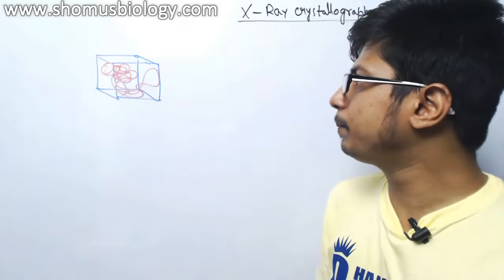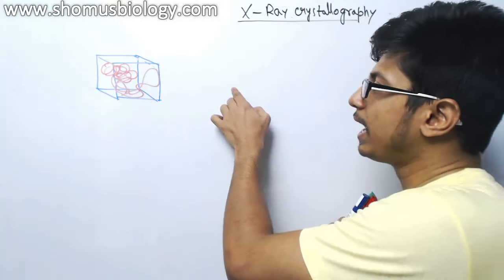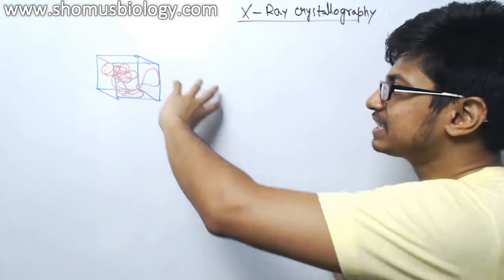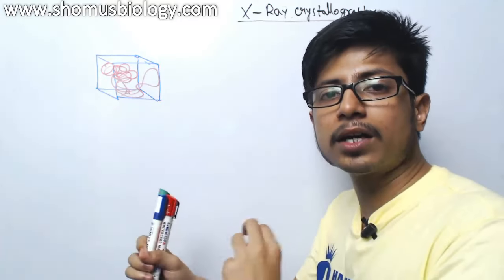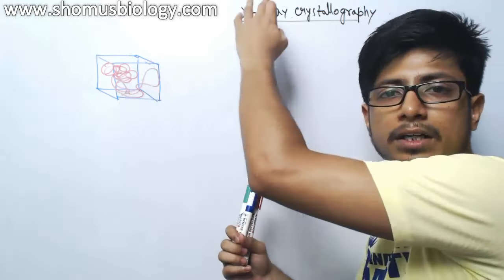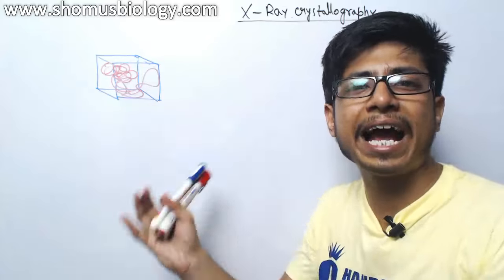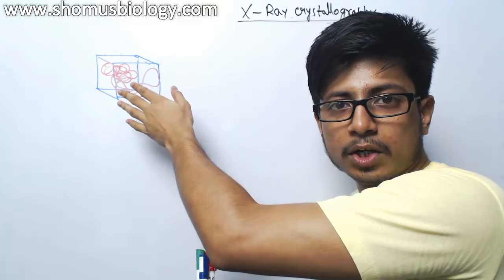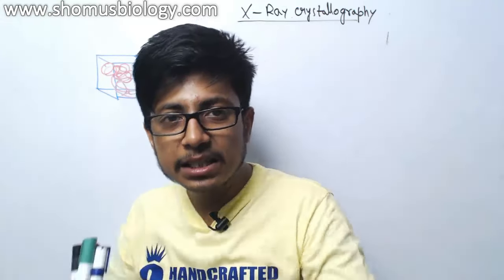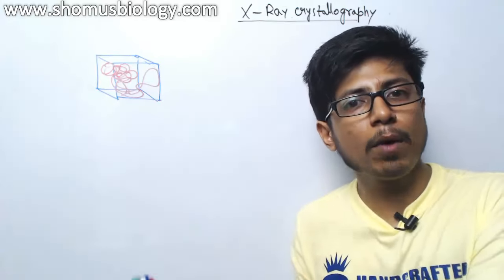The very basic idea of X-ray crystallography is we put X-ray to interact with this crystal. Whenever we hit X-ray onto the crystal, the crystal will diffract part of this X-ray. Diffraction is very similar to reflection. The X-ray goes towards the crystal, interacts with it, and is diffracted at a specific angle. The diffraction pattern varies depending on the type of molecule we are looking at, and this diffraction pattern is unique for different types of molecules.